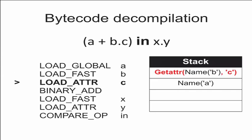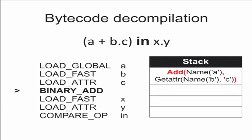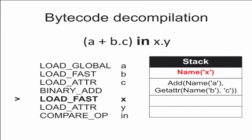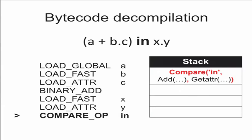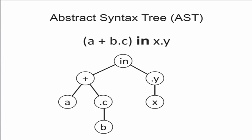Then we load the x variable and get the y attribute of x. Finally we pop two stack elements and push a compare node which combines them. As you can see, this process is very straightforward — it doesn't have too much magic. Generator code is not that long, and we don't need to build a whole decompiler because generators only use a subset of Python bytecode operations. As the result of the first step we get an AST — a tree representation of the expression.